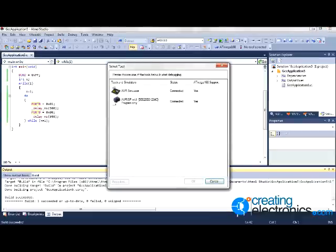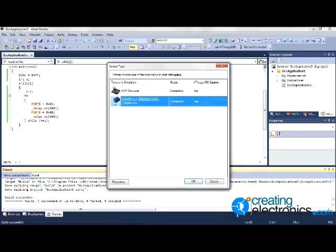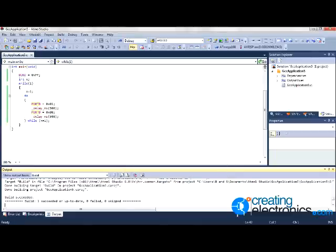You want to select the second one down, which is the AVR ISP programmer, and click OK. It'll transfer that onto the chip and you should end up with something looking like that.